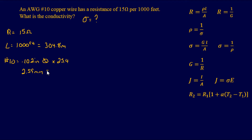This has to be in the metric system, so I'm going to multiply 0.102 by 25.4, which gives us 2.59 millimeters. Converting that to straight meters gives us 0.00259 meters.